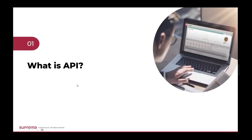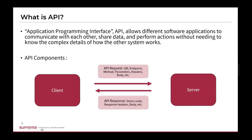Let's start with the basics. What is API? API stands for Application Programming Interface. Simply put, an API allows two different software applications to communicate and share data. For example, a client like a mobile app can send a request to a server to access data or services. The server then responds with the data, allowing the app to display or use it even without direct access to the backend systems. In other words, it's the middleman that helps applications talk to each other.